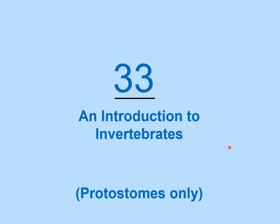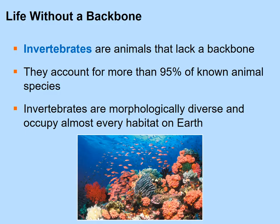Welcome to chapter 33, the first part of a two-chapter sequence on animals. This first part concentrates on protostomes only, even though this chapter also covers some deuterostomes at the end. The focus is really on invertebrates — what makes them invertebrates is that they do not have a backbone. Invertebrates make up about 95 percent of all animal species on Earth.